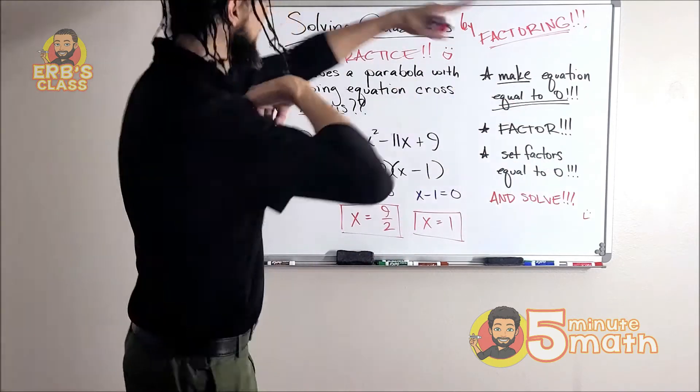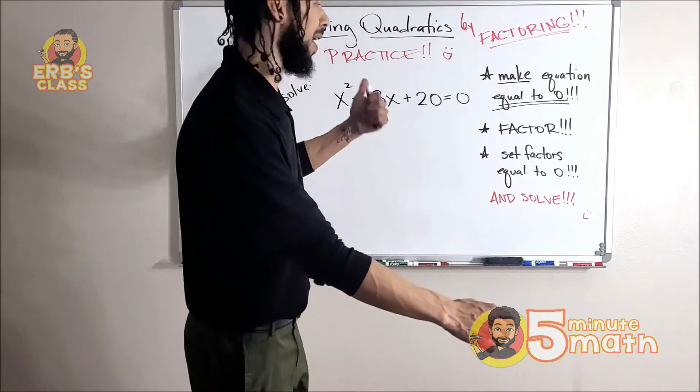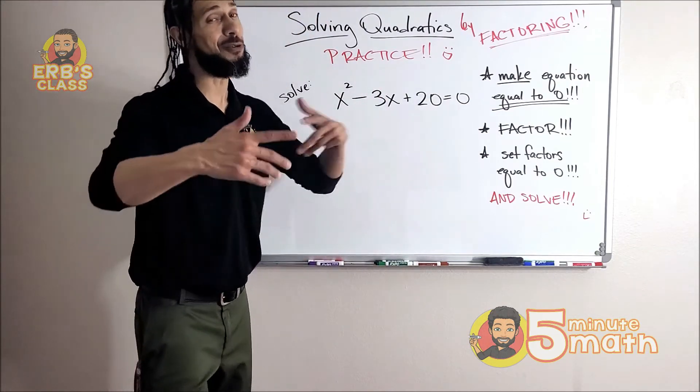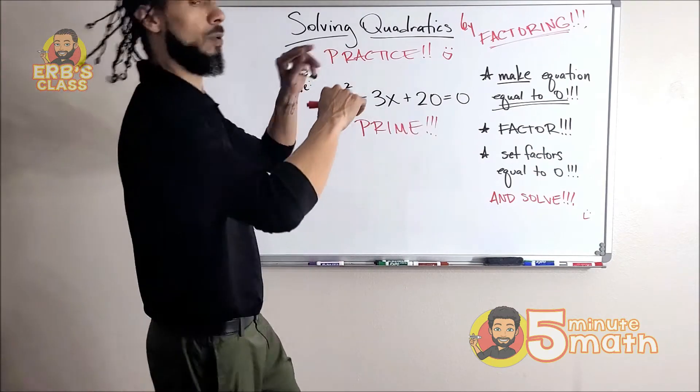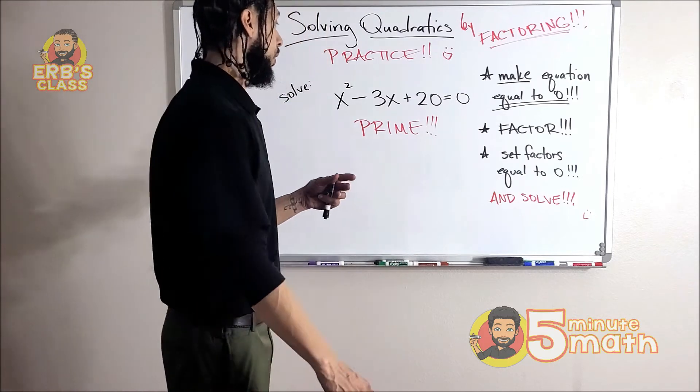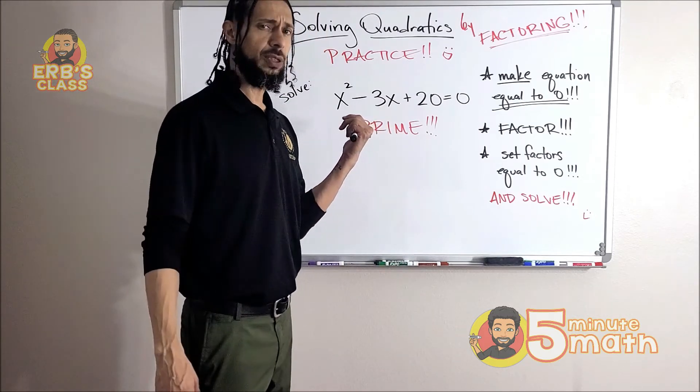Okay, here we go. We're like back to basics here. That's what's up. So it's already equal to zero, so next step: factor. Oh, what? Oh, this can't be factored. This is what we call prime.